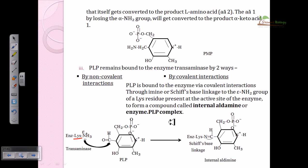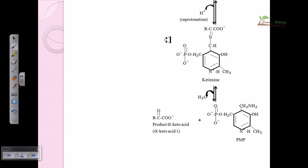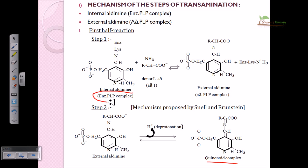PLP is attached to the enzyme via the lysine residue of the enzyme. Then PLP exchanges with the amino acid — it accepts the amino group from the amino acid and then leaves, regenerating the enzyme-PLP complex. The overall mechanism of transamination involves two steps: formation of the internal aldimine, then the external aldimine, which is converted into the quinonoid complex.